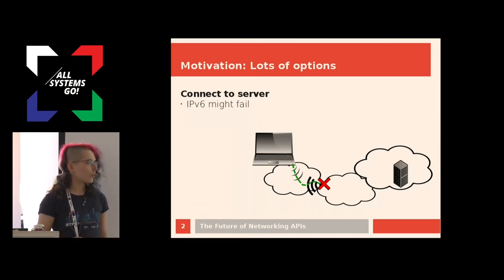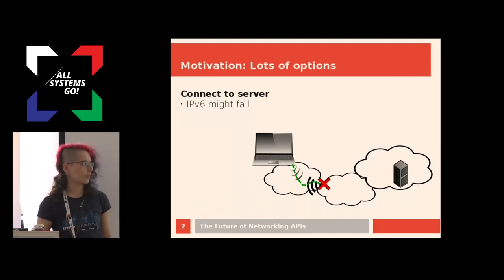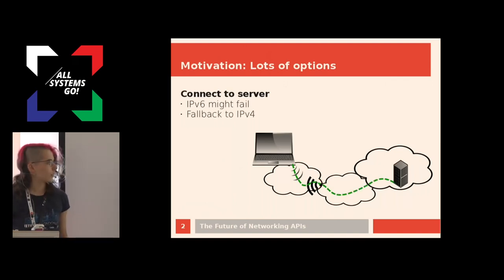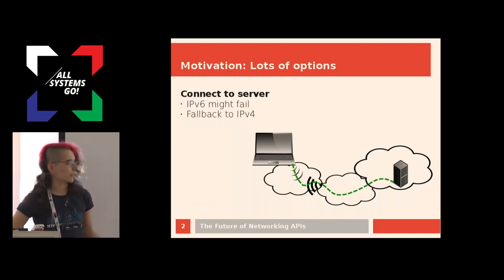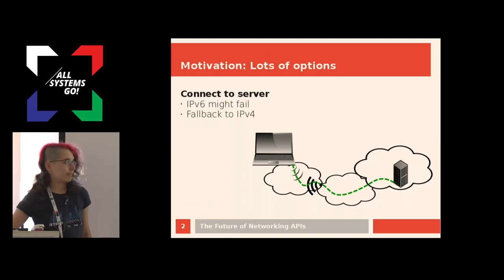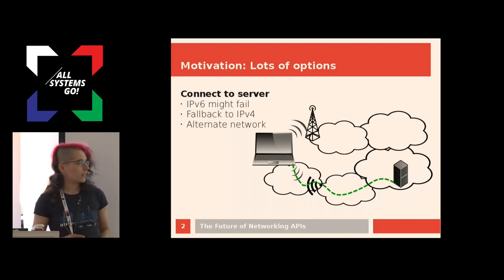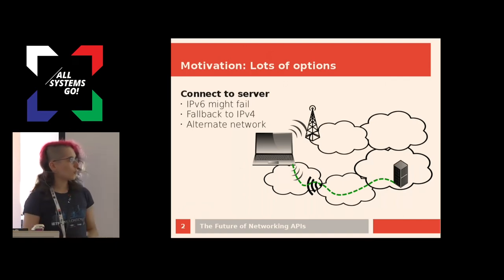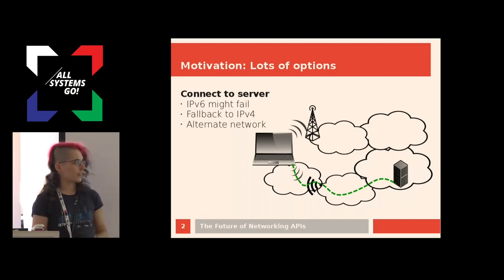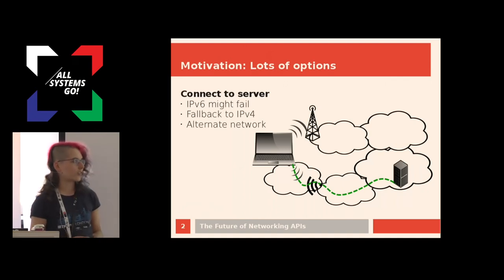Our application hopefully notices that at some point and doesn't come back with 'everything failed', but it remembers that there's still IPv4, and so it can connect to the server and implement this fallback itself.